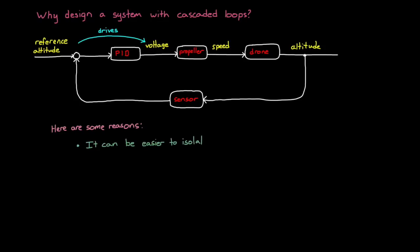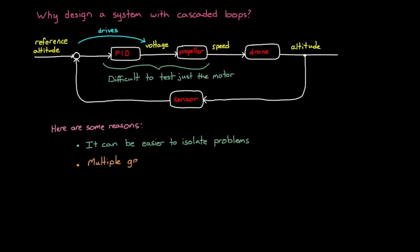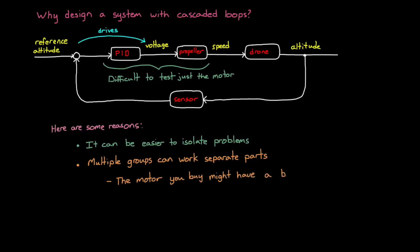Here are two reasons for cascaded loops. The first is that with a cascaded approach, it can be easier to isolate problems in the system. In our single loop example, if we have a problem with the motor, it can be difficult to test just the motor separate from the rest of the altitude system. With the cascaded loop scenario, we could run the motor controller closed loop and determine if the problem exists with the motor or with the rest of the system. The second reason is that multiple groups can work on separate parts of the problem — one team might build the motor controller, while another is responsible for the altitude controller. This is especially the case if you buy a motor with an integrated motor controller, where the supplier has already designed the inner loop for you.